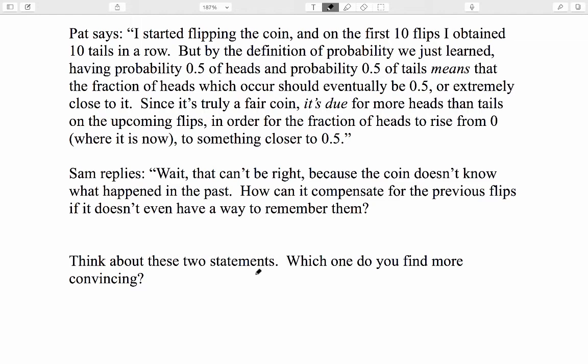Pat begins the debate by saying, I started flipping the coin, and on the first 10 flips, I obtained 10 tails in a row. But by the definition of probability we just learned, having probability 0.5 of heads and probability 0.5 of tails means that the fraction of heads which occur should eventually be 0.5, or extremely close to it. Since it's truly a fair coin, it's due for more heads than tails on the upcoming flips in order for the fraction of heads to rise from 0 where it is now to something closer to 0.5. These are the key words in Pat's position. The coin is due for more heads than tails to compensate for the extra tails that have already occurred.